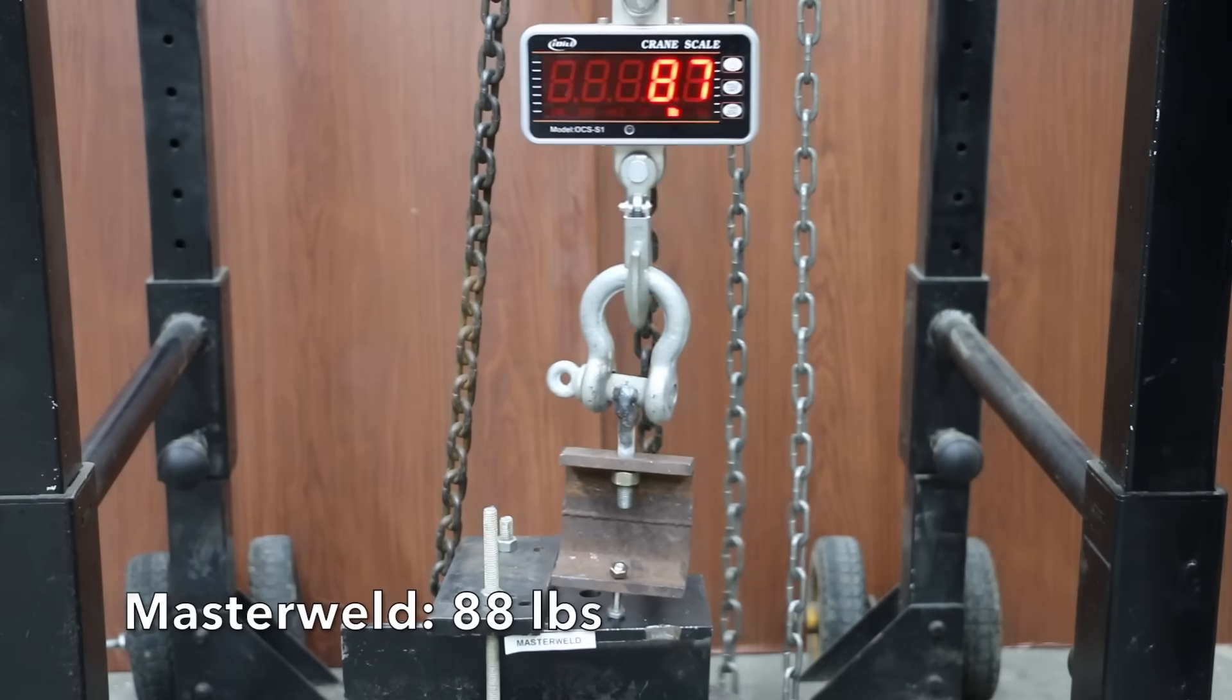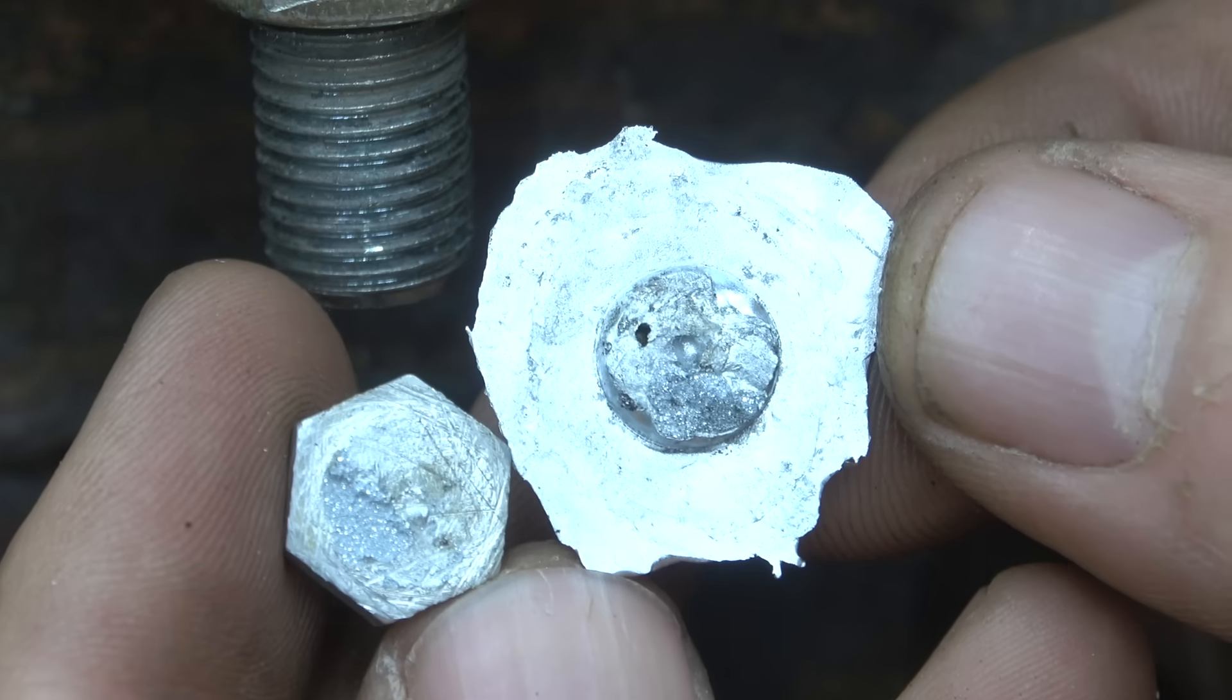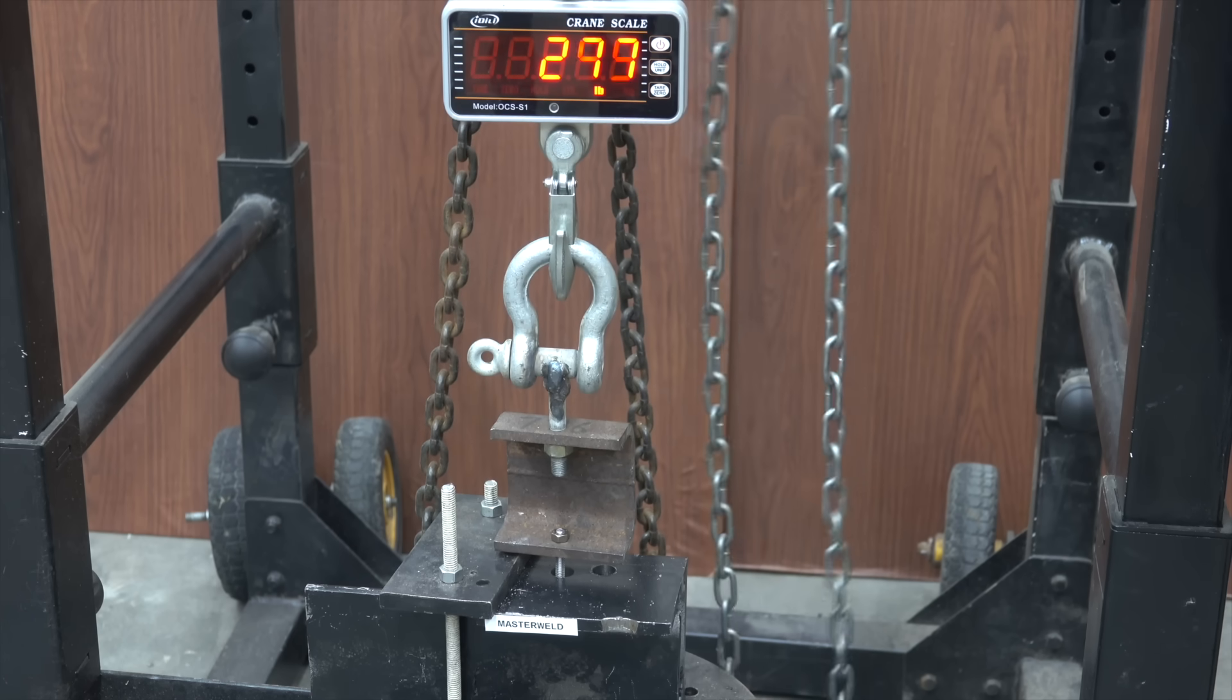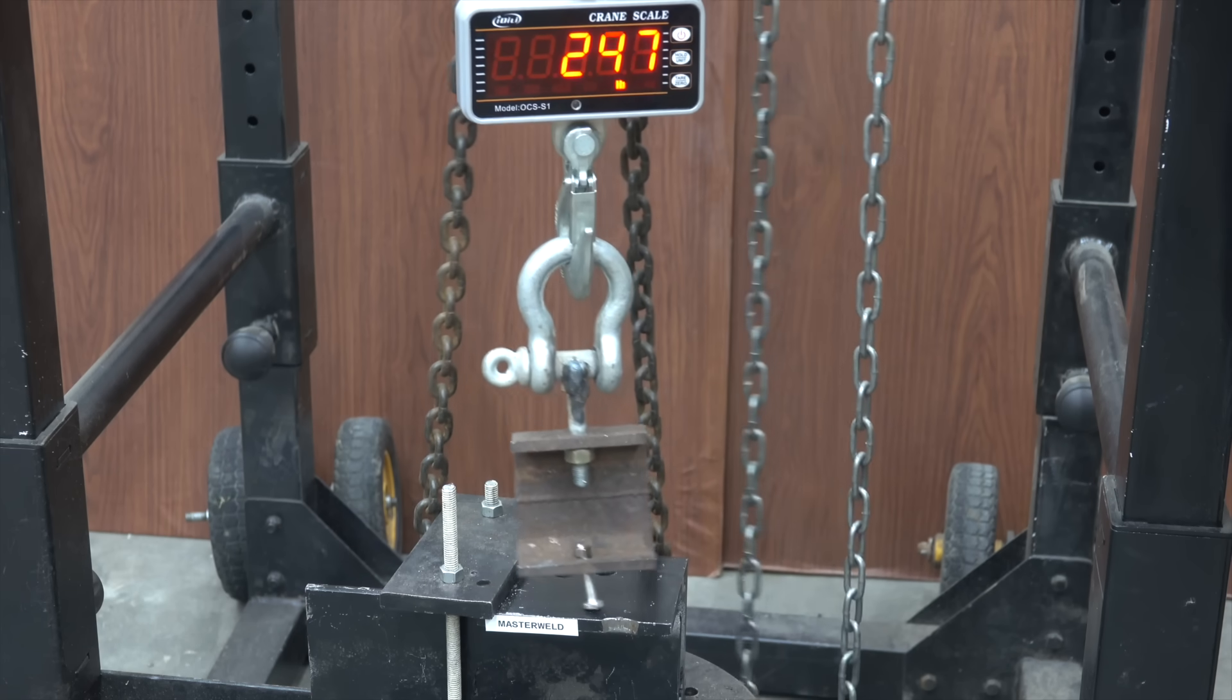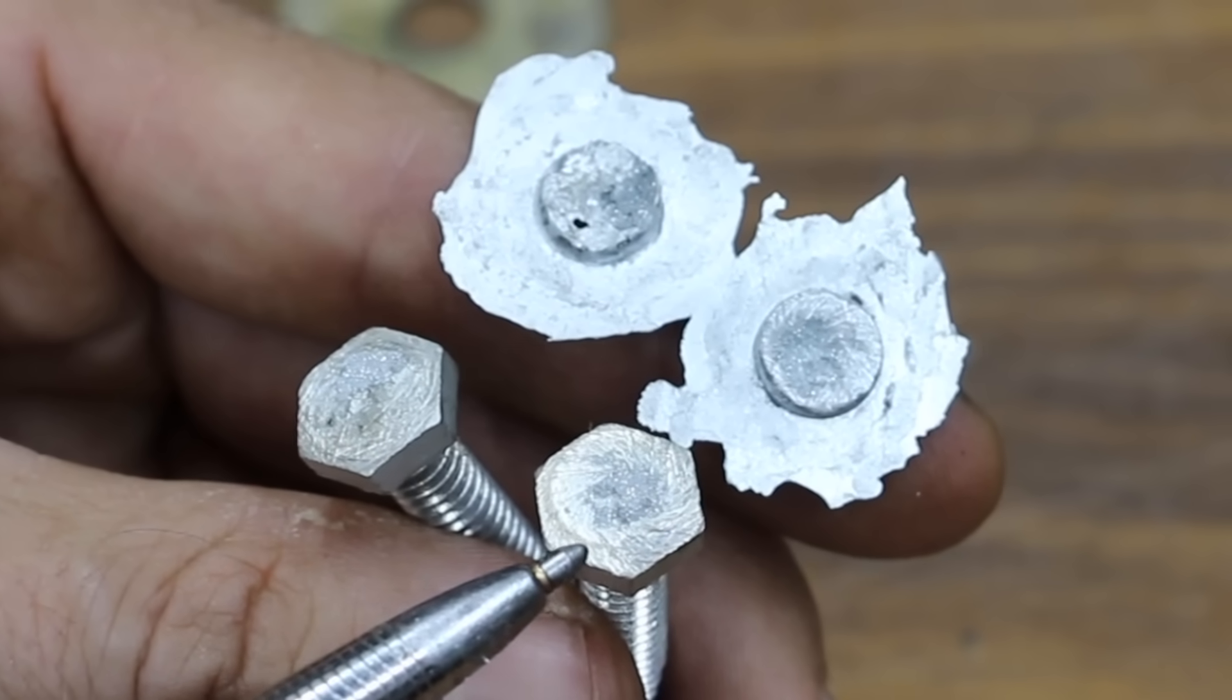Wow, only 88 pounds with the Master Weld. Unfortunately, the Master Weld just didn't stick to the aluminum bolt very well. So let's try this again with a new sample. 348 pounds is a lot better than the first sample, but still nowhere close to the competition. In both instances, the weld failed at a relatively low weight compared to the competition.